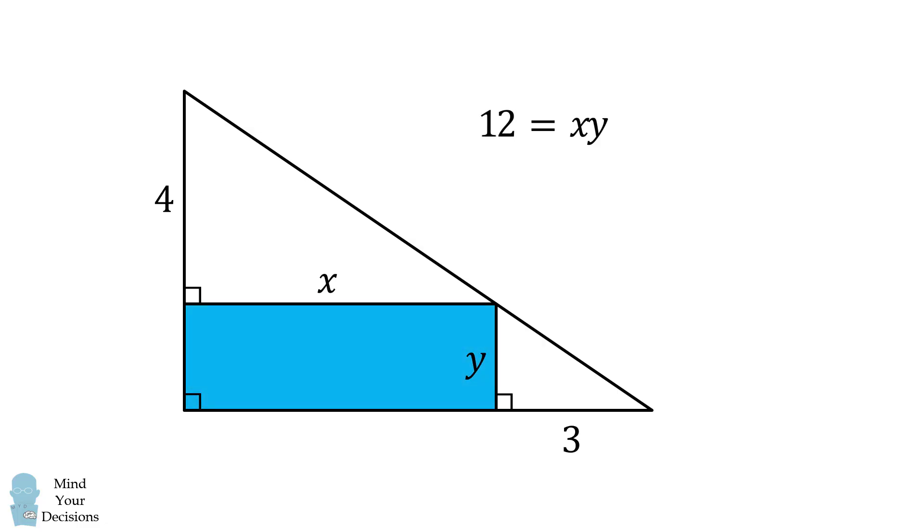But X times Y is exactly the area of the rectangle. Thus, the area of the rectangle is always equal to 12. That's the answer to part 1.